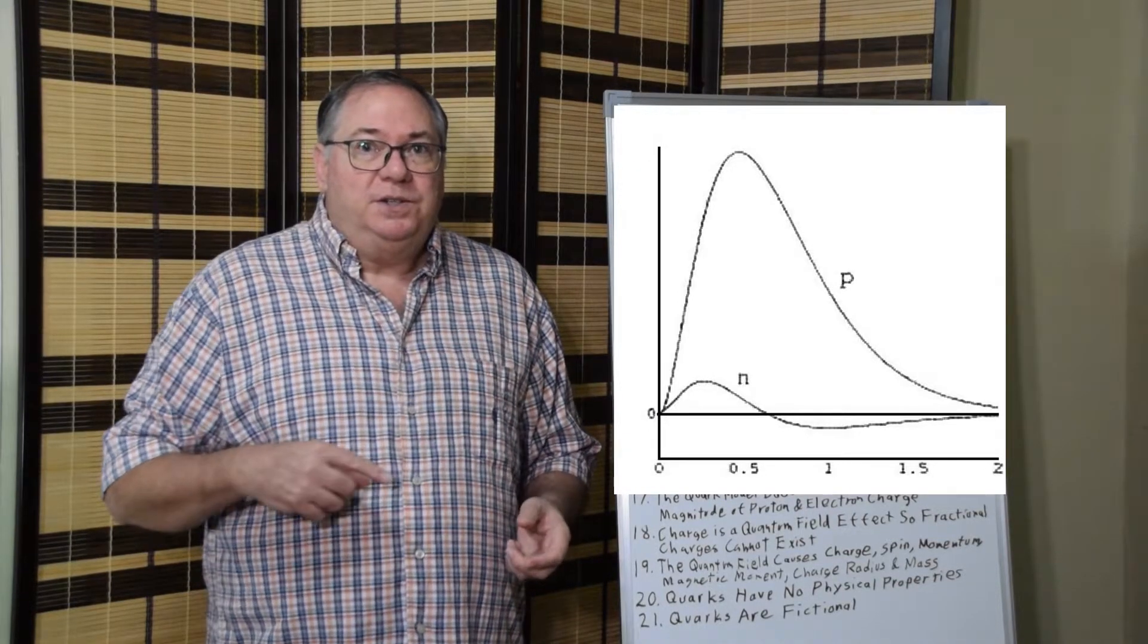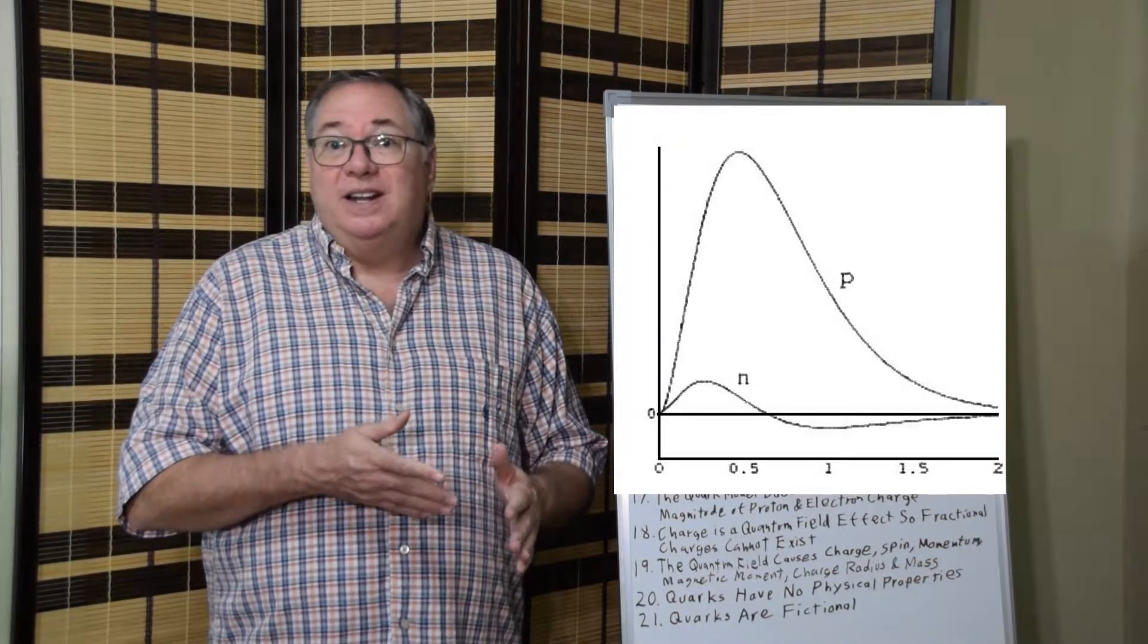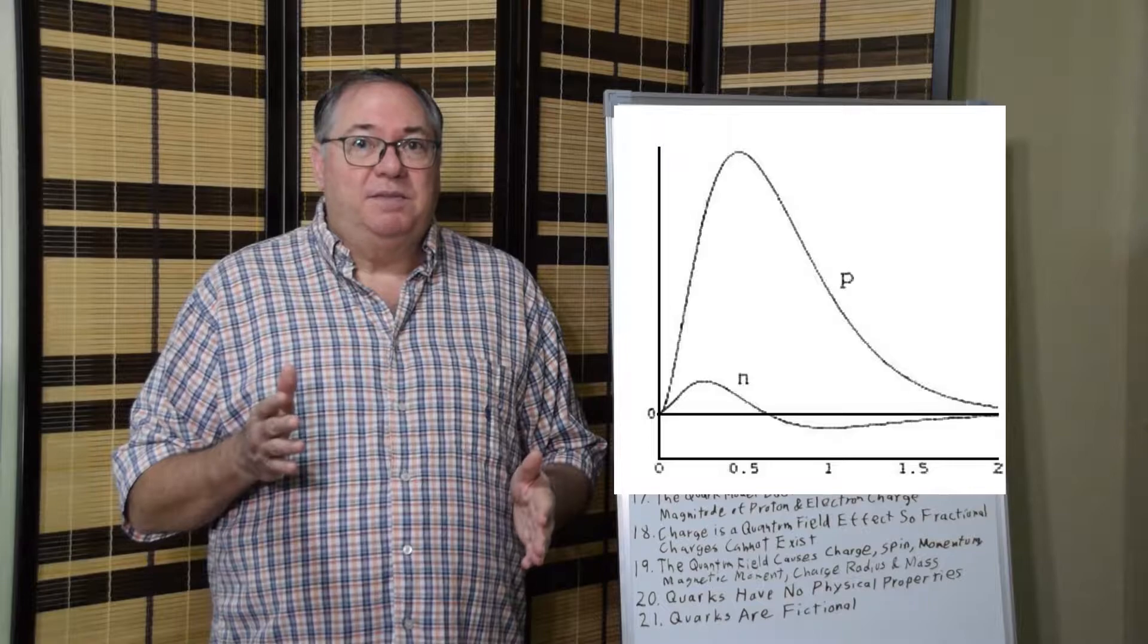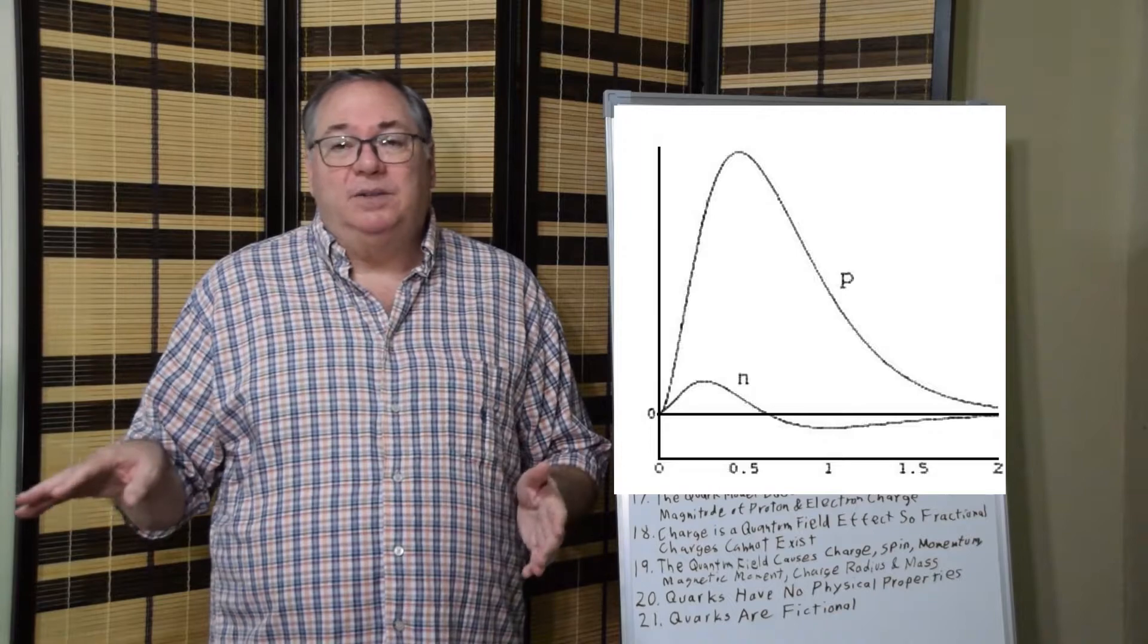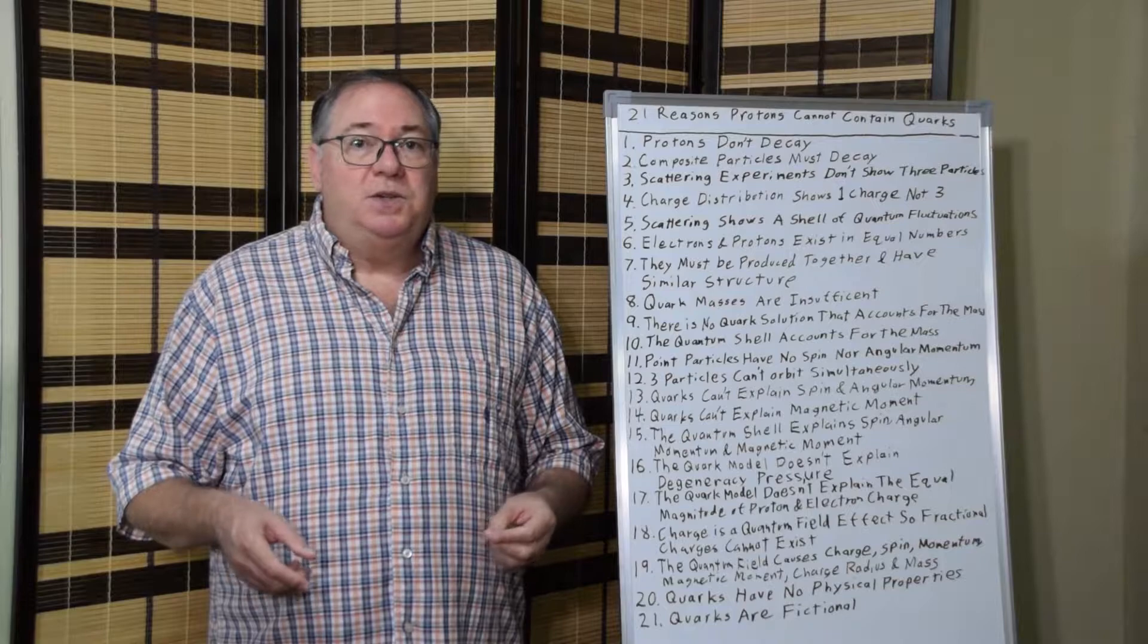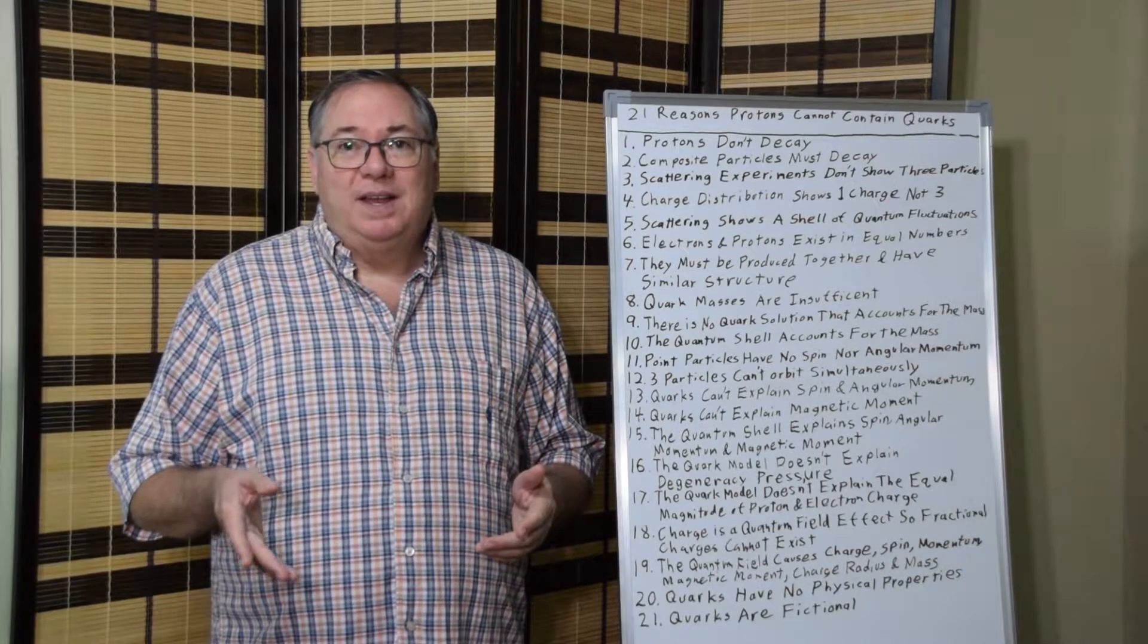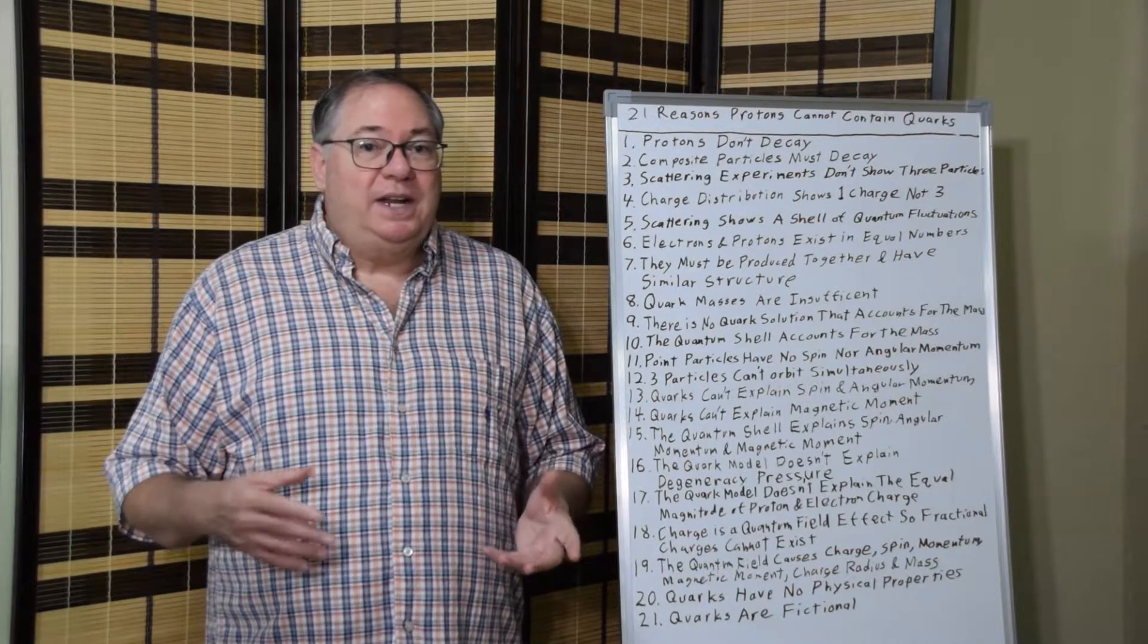I'll put up the charge distribution here. But basically, it has a curve starting at zero. It's not even a positive charge at the middle. And it goes up until it hits the radius of the proton. And then from there it starts to decline, following the inverse square law curve that we would expect. So the charge of the proton is principally located at the radius, not at the center even. And it's certainly not three charges.